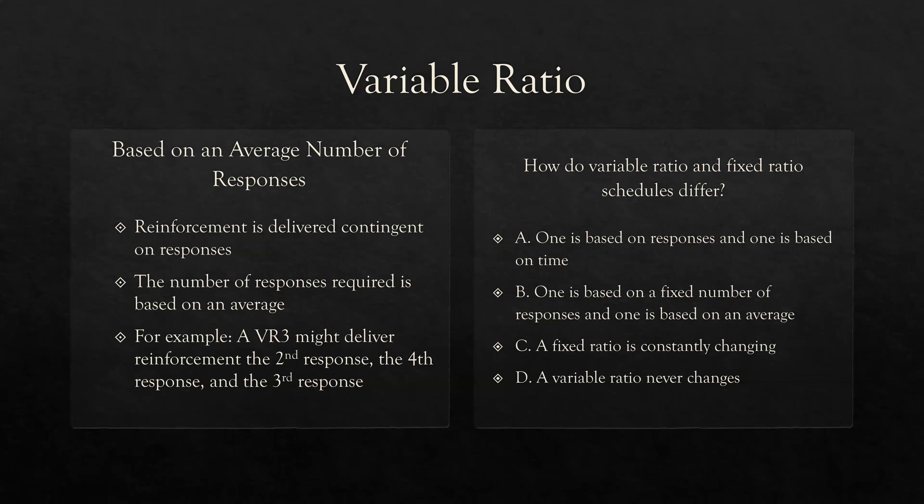A lot of times variable ratios are just described as a changing number, which is fine, but the technical way to look at it is you take an average number of responses. You should really be looking to work around that average — in this case a VR3, an average of 3 responses required for reinforcement.